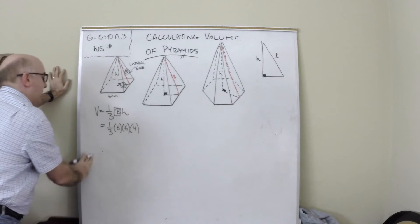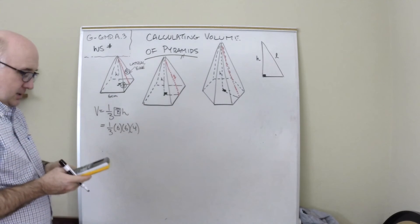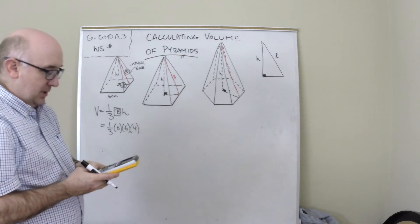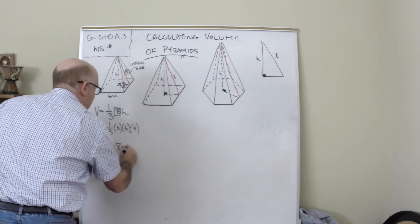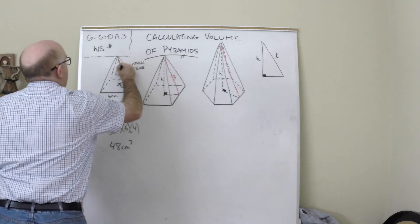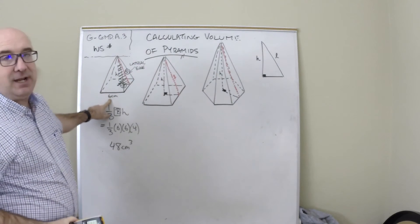Then I would just simply do the math here. I would take 36 and divide it by 3 and multiply it by 4, and I would get 48 centimeters cubed.